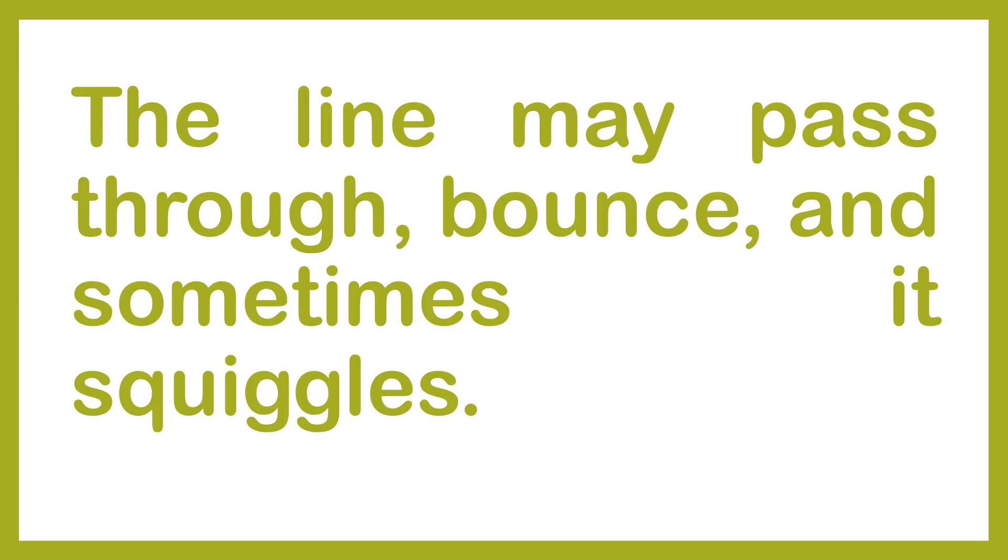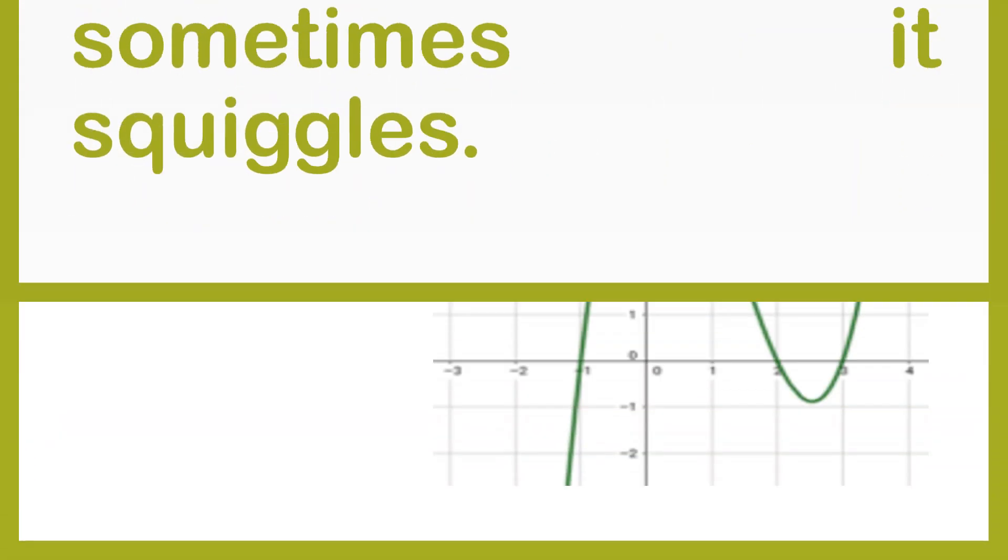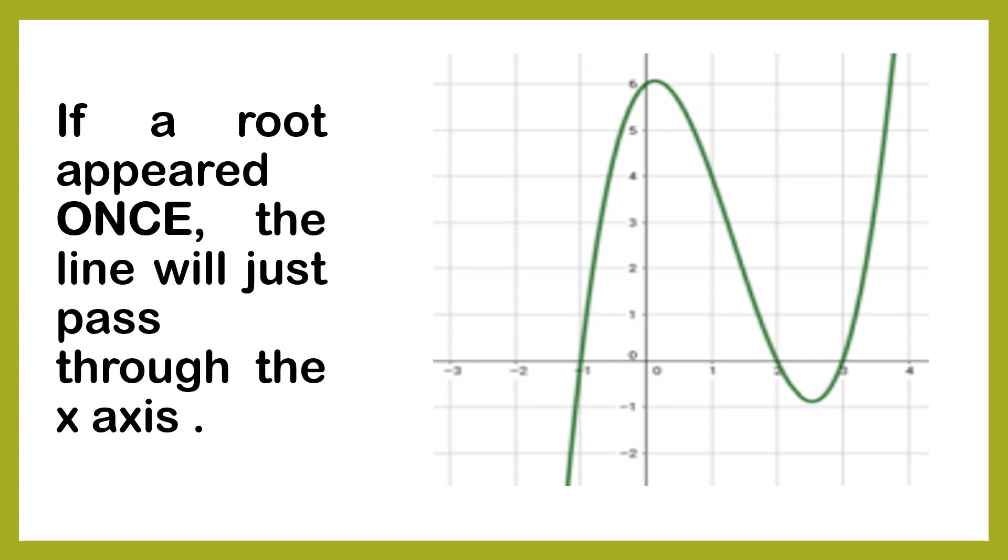The line may pass through, it may bounce, and sometimes it squiggles. If a root appeared once, if it appeared only once, or the value of x, or the x-intercept appeared only once, the line will just pass through the x-axis. It will quickly pass through. Just a direct pass.